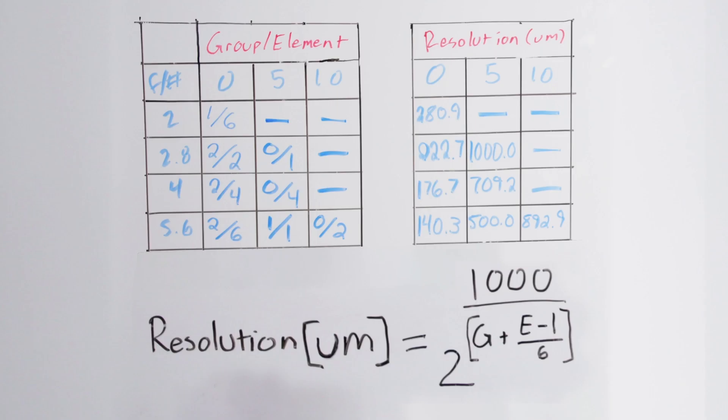You can see the smallest set of bars we can adequately resolve on the chart on the left, which is what I recorded during our experiment. We can use the below equation to convert these coordinates into a physical resolution value in micrometers. So, a smaller number indicates a higher resolution for our imaging system. And this resolution is the smallest possible feature we could resolve in object space.